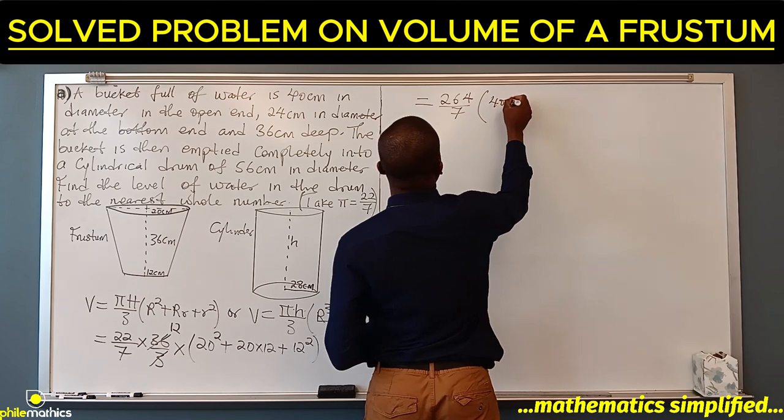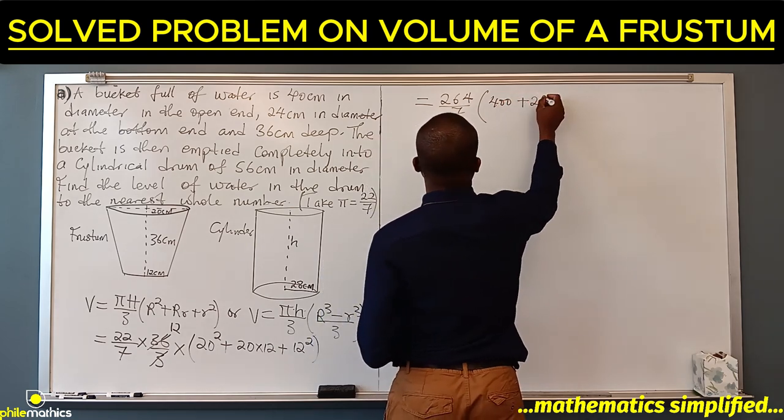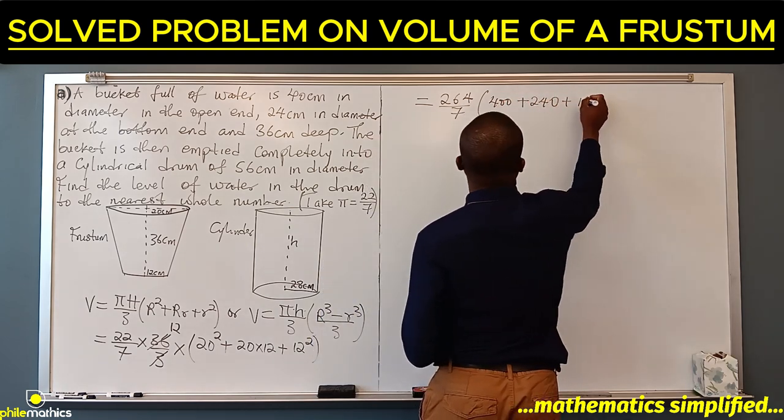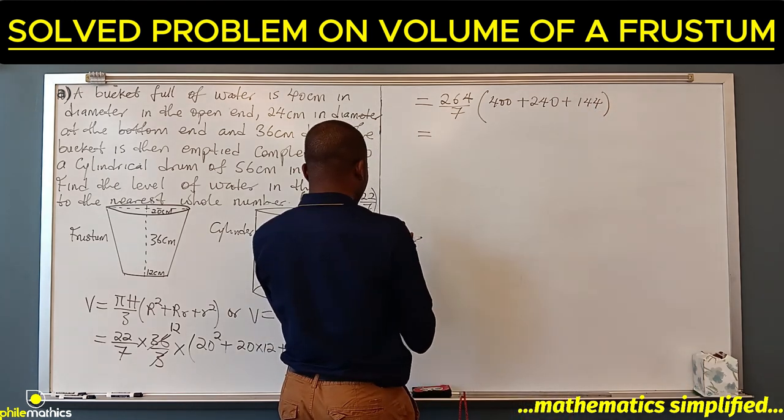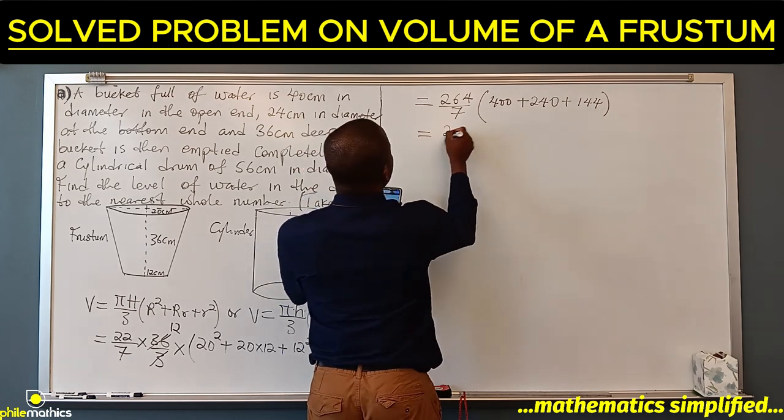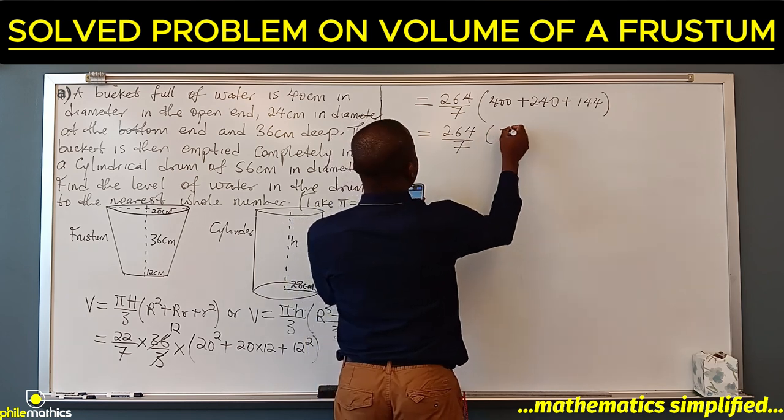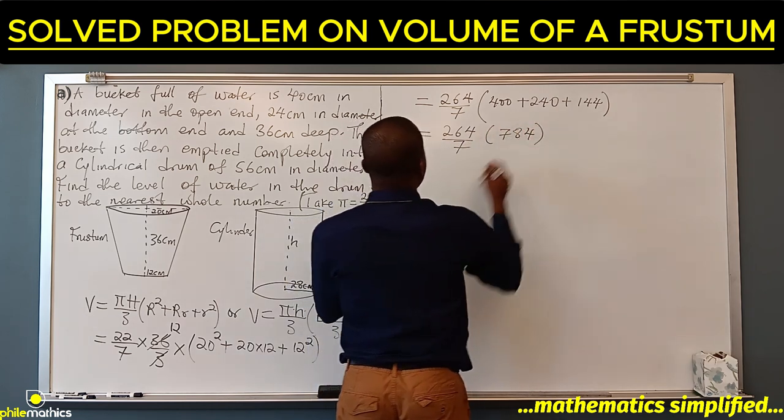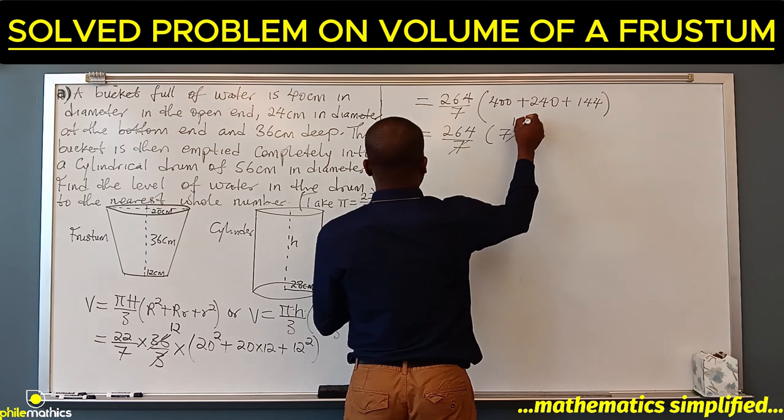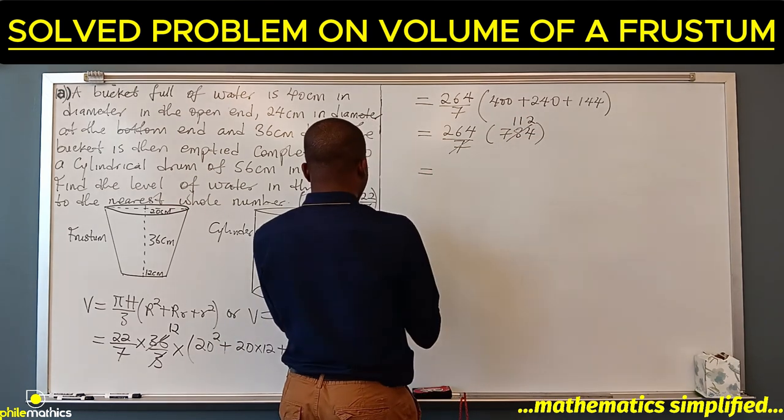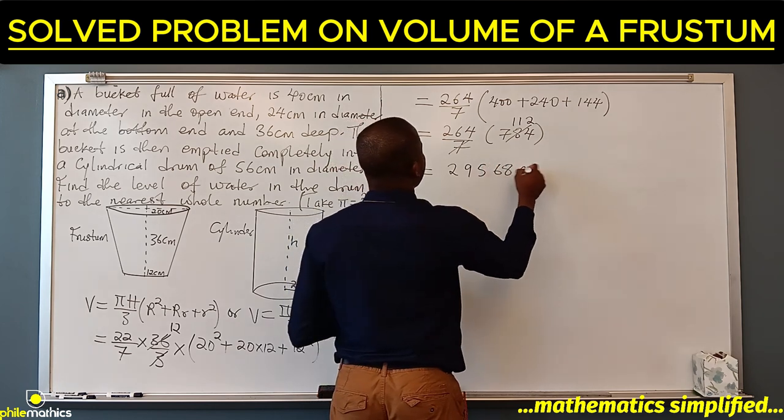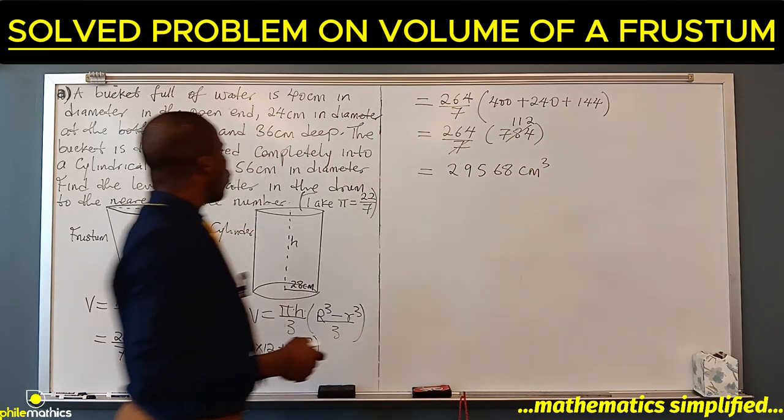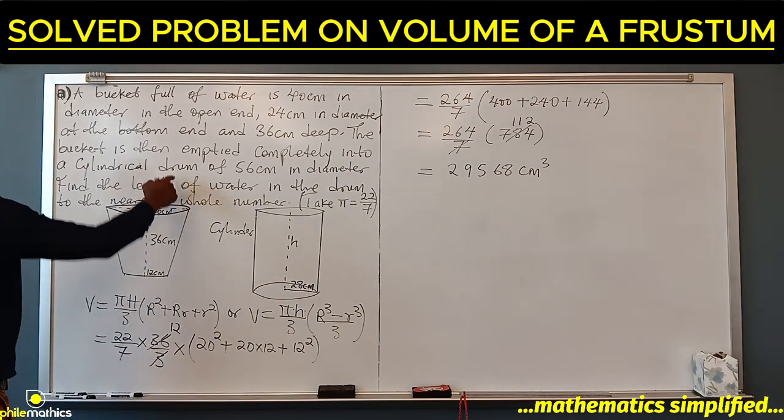So if we sum it up, we get 264/7 times 784. Seven can divide 784, 112 times, and 264 times 112 will be 29,568 cm³. So this is the volume of water that was poured into the drum of cylindrical shape.